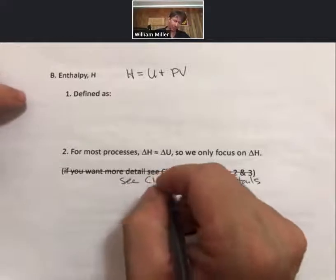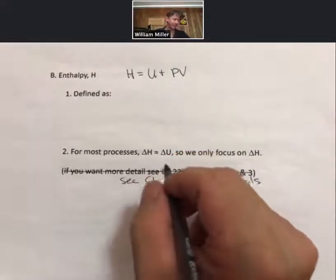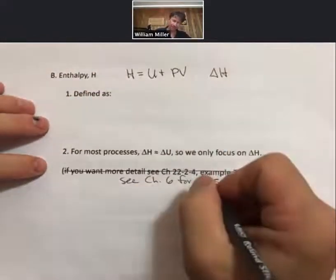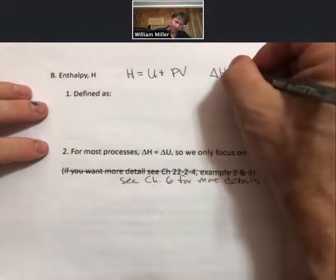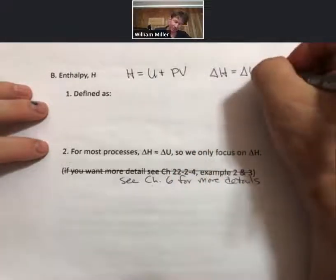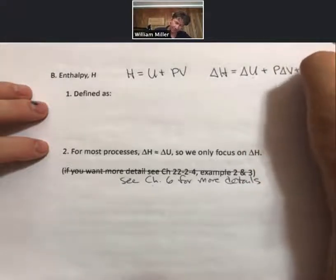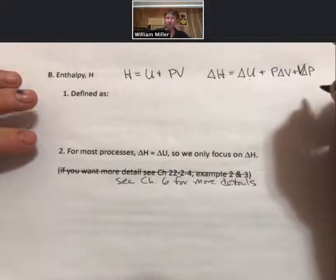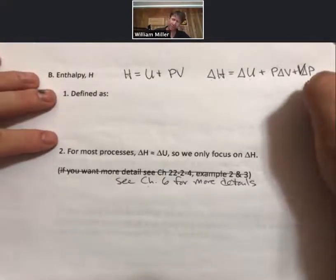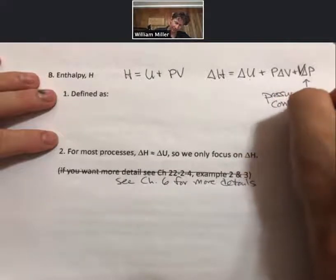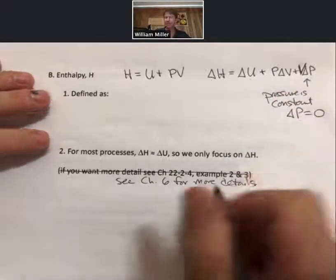But what we want to know is actually not technically H, but we're going to talk more about delta H. And delta H is going to equal delta U. So the change in enthalpy is going to equal the change in internal energy plus P delta V plus V delta P. And what we will do is we will restrict our work for calculations in which pressure is constant, which means delta P equals zero.